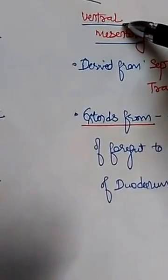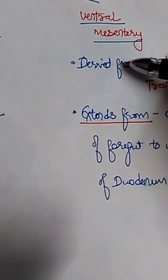Whereas the ventral mesentery is derived from the septum transversum.